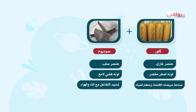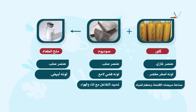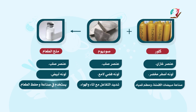أما عنصر الصوديوم فيتواجد في الحالة الصلبة، لونه فضي اللمعان، وعند احتراقه ينتج لهب أصفر، وهو شديد التفاعل مع الماء والهواء، لذلك يُحفظ تحت طبقة من الكيروسين. وعندما يتحد الكلور مع الصوديوم يتكون مركب جديد بخصائص جديدة تختلف تماماً عن خصائص عناصره، يسمى مركب ملح الطعام أو كلوريد الصوديوم، وهو صلب وذو لون أبيض ولا تكاد تخلو مائدة الطعام منه.